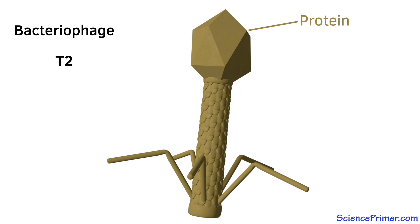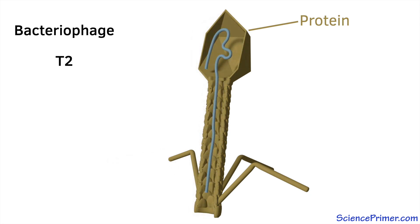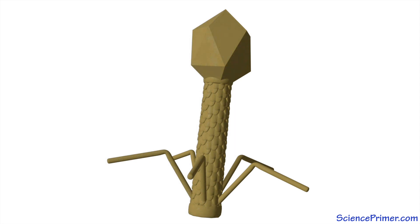In many ways, the phage infection system was an ideal system with which to try to determine the role of protein and DNA in heredity, as the phage particles were made of a strand of DNA surrounded by the protein coat. Meaning, the information needed for phage to use bacteria to produce more phage had to be made of protein and/or DNA. There was no other option.